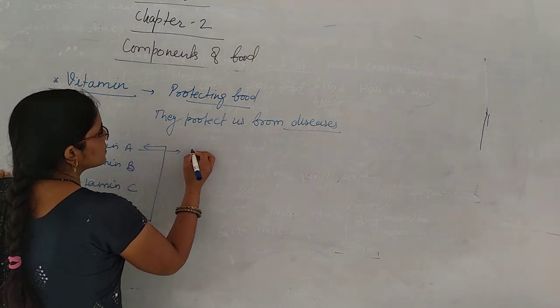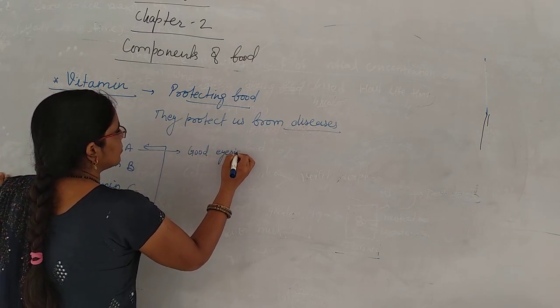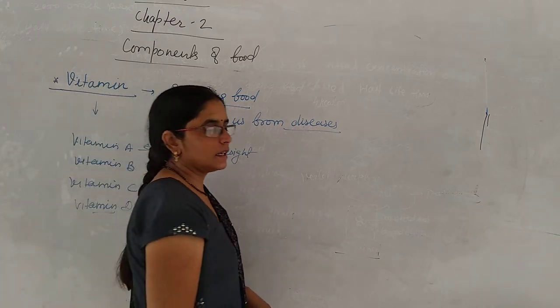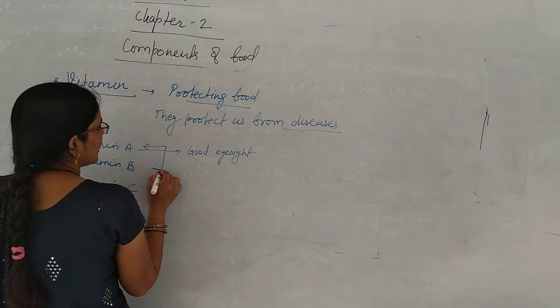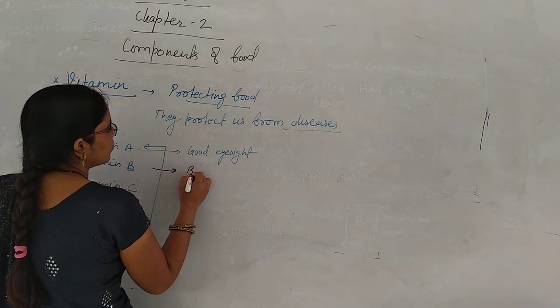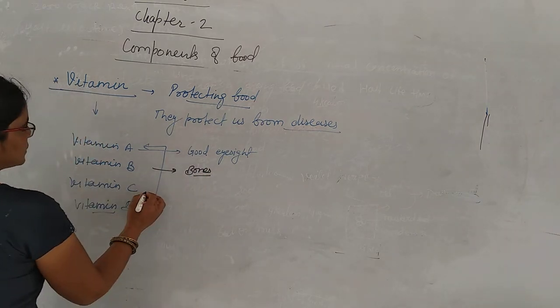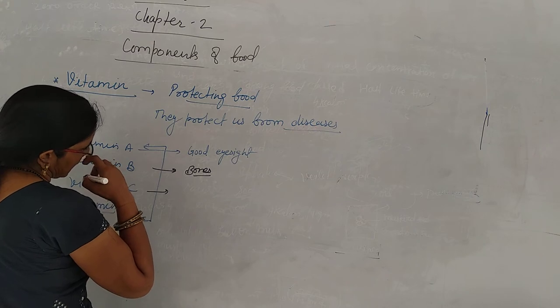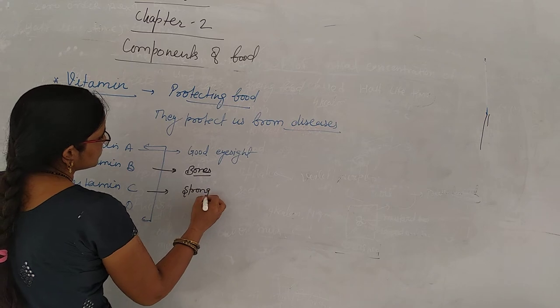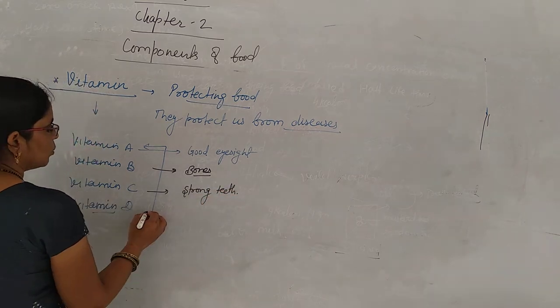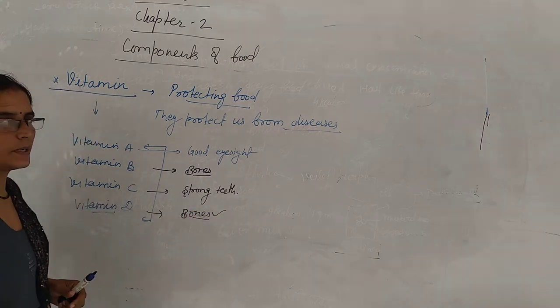Vitamin A is very essential for good eyesight. Vitamin B is essential for our bones and muscles. Vitamin D is also essential for our bones. Is that clear?